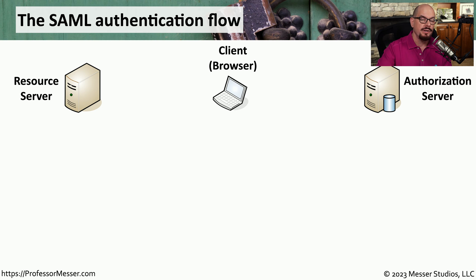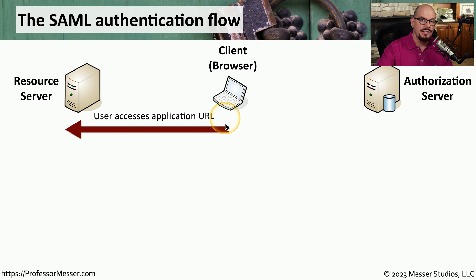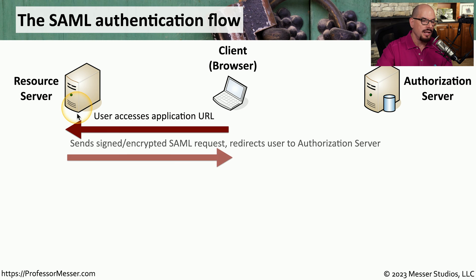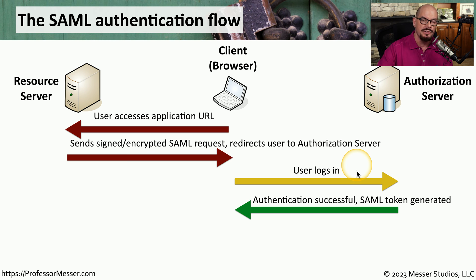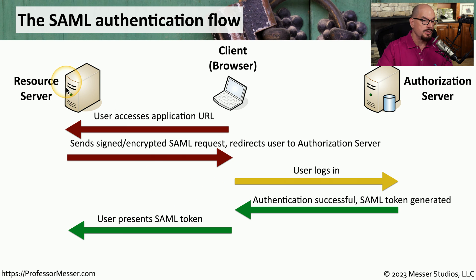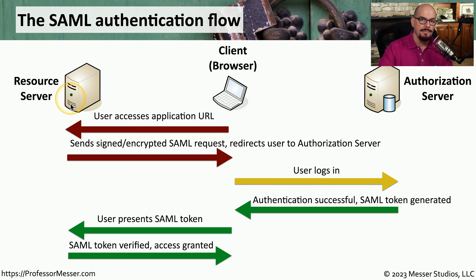A basic SAML process involves three different devices: the client device (usually a browser), the resource server you're trying to access, and a separate authorization server. This process starts on the client, where the client wants to access a URL on the resource server. Since the user is not logged in, the resource server sends an encrypted SAML request and redirects it to the authorization server. The user then provides credentials, the authorization server checks and approves them, and creates a SAML token. The client now has a copy of this token and only needs to present it to the resource server to gain access to the resource and application.